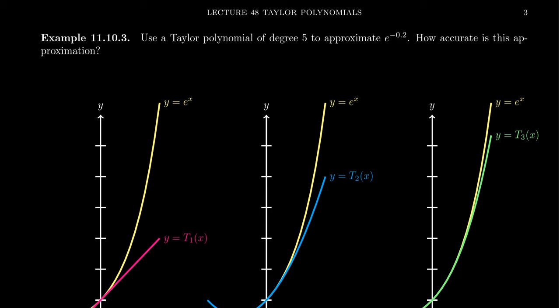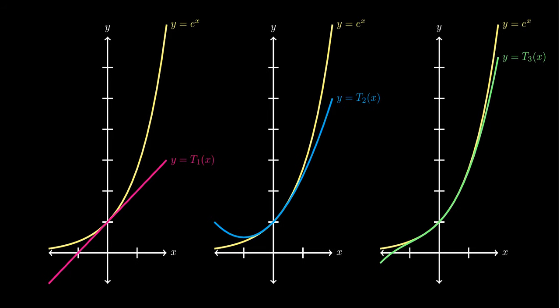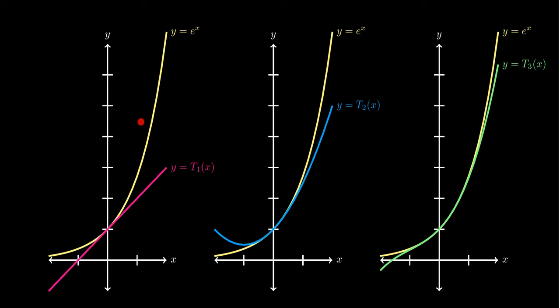Before we jump into the nitty-gritties of the calculation, I want to show you why Taylor polynomials are such good things to approximate with. Notice here in the first picture on the left, you see in yellow the natural exponential y equals e to the x. And in magenta you see the straight line — this is the tangent line, y minus f of a equals f prime of a times x minus a. Tangent lines as we've studied in calculus 1 are really just the degree 1 Taylor polynomials. So Taylor polynomials are essentially a generalization of the tangent line approximation.